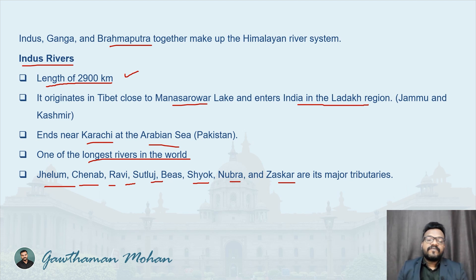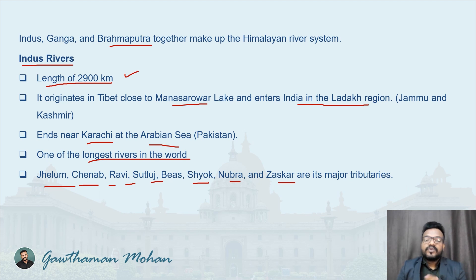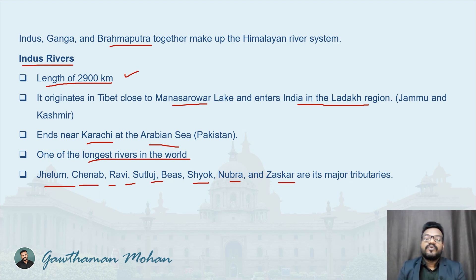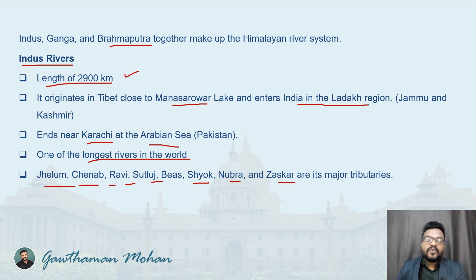These are the important tributaries of the Indus river system. They make the river larger and more voluminous in terms of water capacity — that is the importance of tributaries. To summarize: the Indus is 2,900 km long, originates near Manasarovar Lake, ends near Karachi, and is one of the longest rivers in the world.